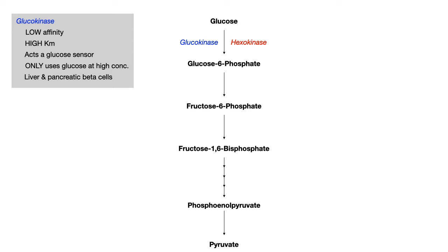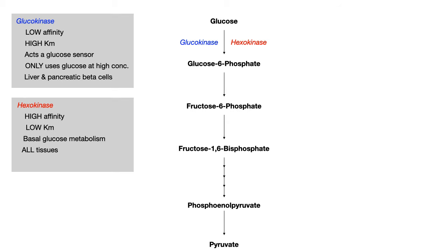Glucokinase acts as a glucose sensor, present in the liver and the pancreatic beta cells, and is only used when glucose is at high concentrations. Think of glucokinase as an emergency enzyme acting as a glucose sensor — not grabbing glucose to break it down through glycolysis, but sensing glucose levels. Hexokinase, on the other hand, is a high affinity enzyme with a low Km. Because it has high affinity for its substrate, hexokinase is constantly latching onto glucose, converting it to glucose-6-phosphate, and sending it down the glycolysis pathway.